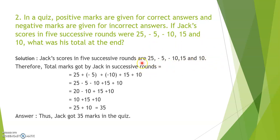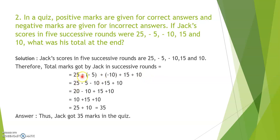This is very similar to what we do in our quiz, where there are positive marks and negative markings. So here we have negative marks of minus 5 and minus 10, and positive marks of 25, 15, and 10. Therefore, total marks got by Jack in successive rounds — we have to find the sum of all the marks. Writing all numbers with their signs: 25 plus minus 5 plus minus 10 plus 15 plus 10. Plus and minus becomes minus, so: 25 minus 5 minus 10 plus 15 plus 10.